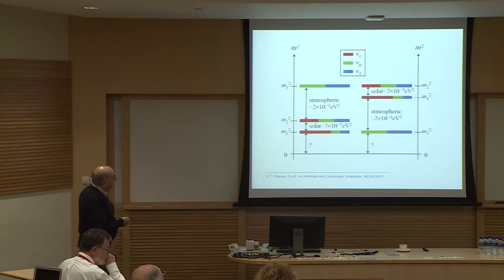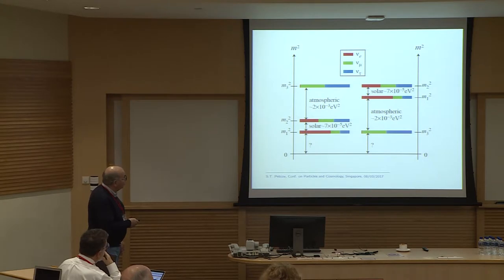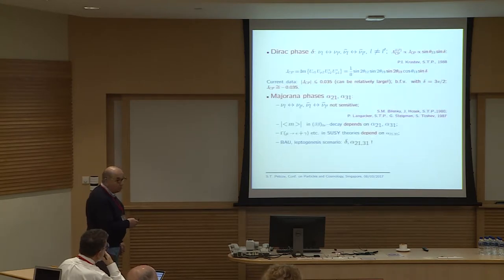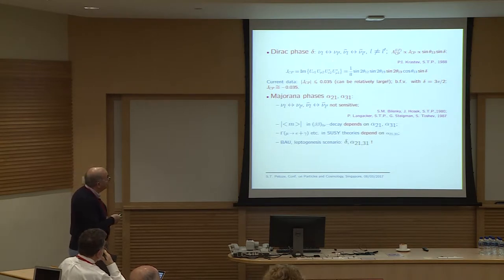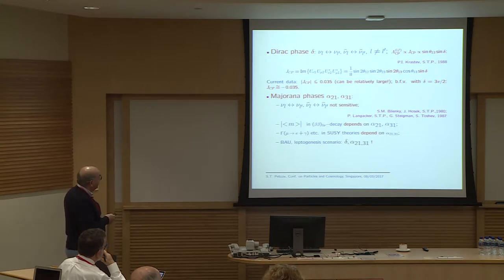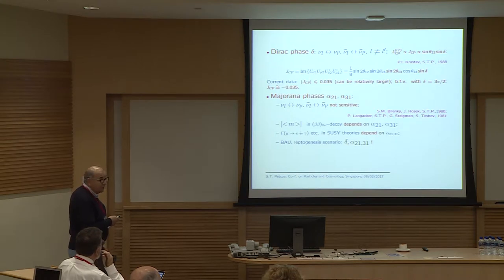Concerning the CP-violating phase: the Dirac phase can cause CP violation in neutrino oscillations, meaning a difference between the probabilities of νₗ→νₗ′ and anti-νₗ→anti-νₗ′ oscillations when l differs from l′. These CP violation effects are controlled by the rephasing-invariant J_CP factor related to the Dirac phase in the neutrino mixing matrix.